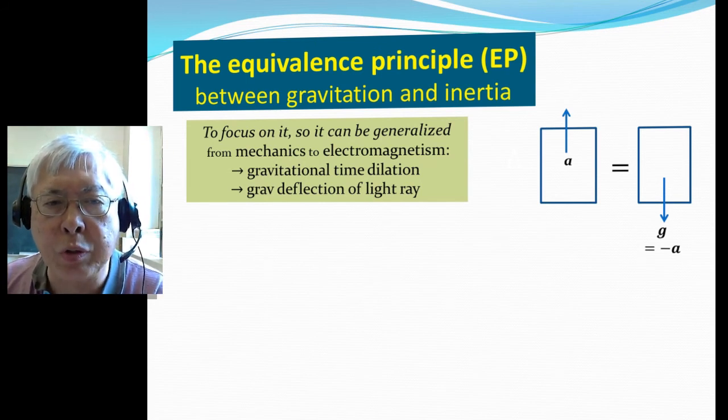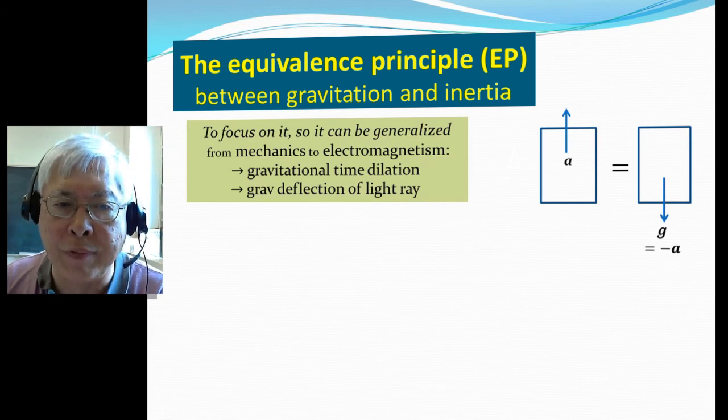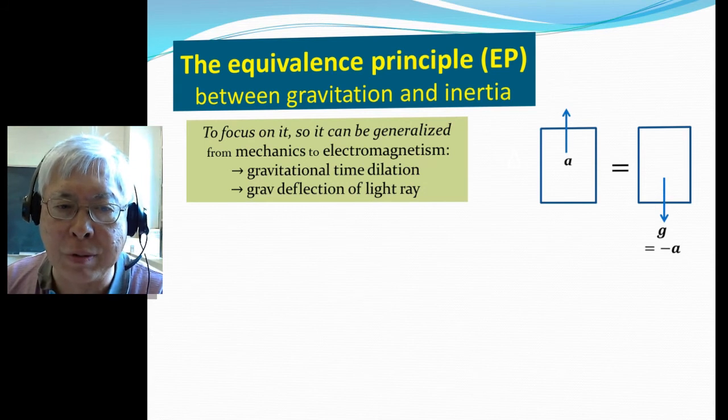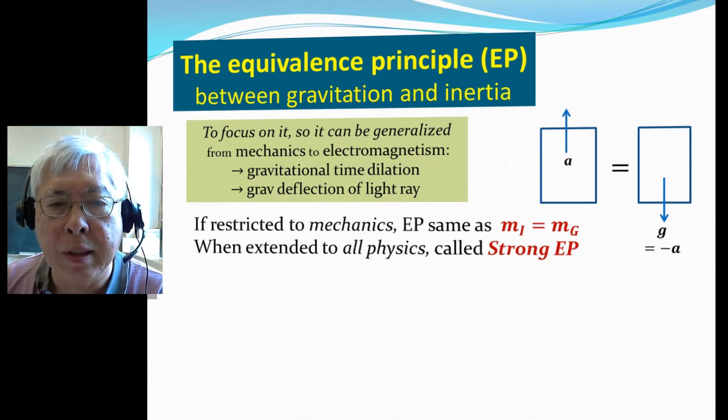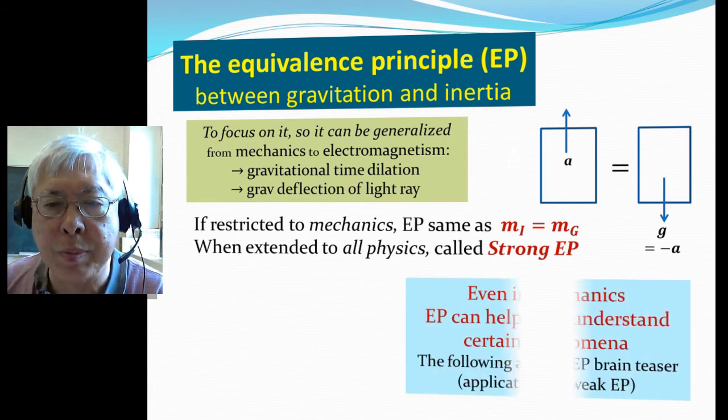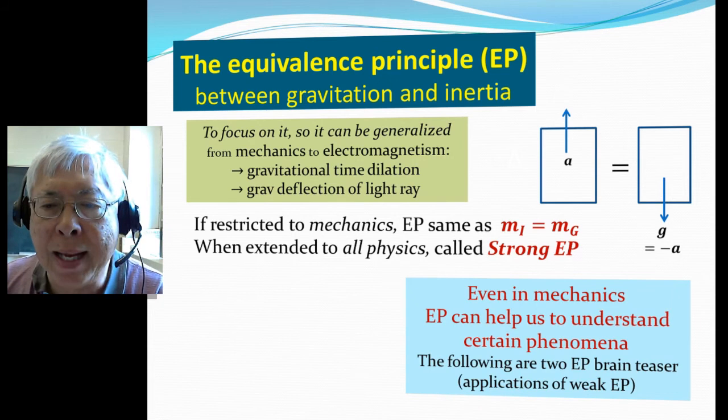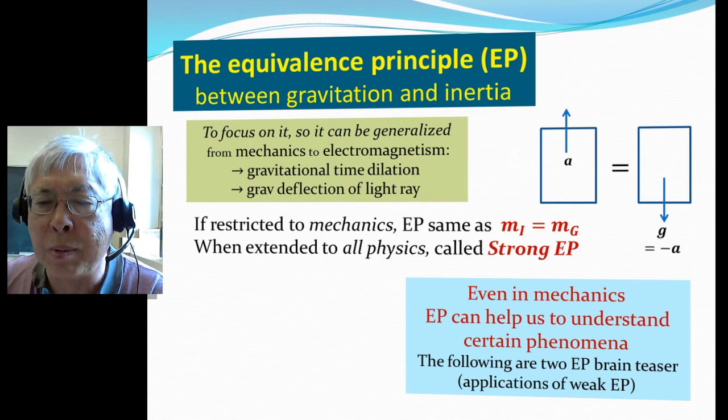In order to focus on it, it can be generalized from mechanics to electromagnetism. For example, we can derive gravitational time dilation and gravitational deflection of light. This extension is what we call the strong equivalence principle.